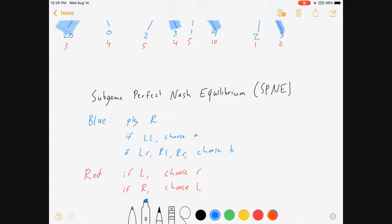Sub-game perfect Nash equilibrium looks like this. Blue will play R. But if we're at the LL node, choose A. And if we're at any of these other nodes, choose B.